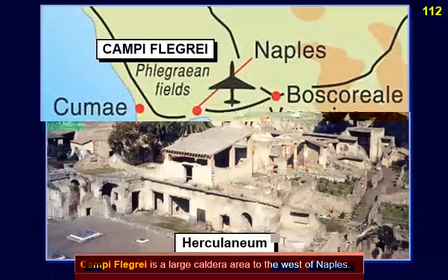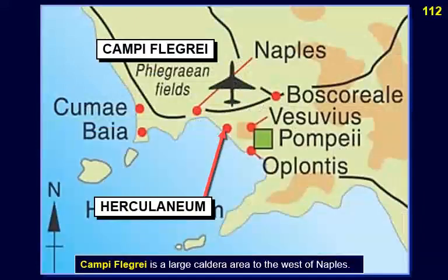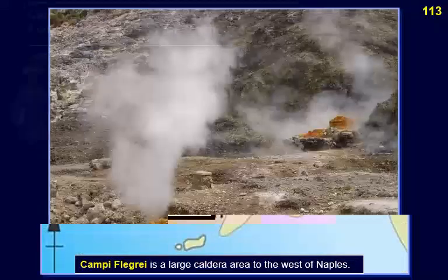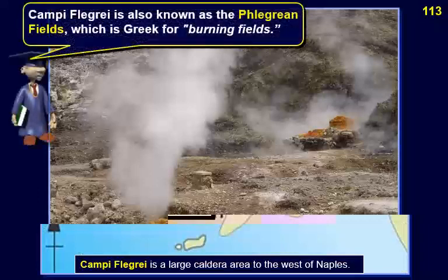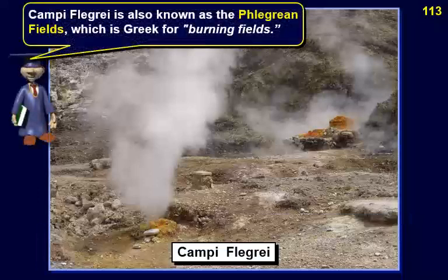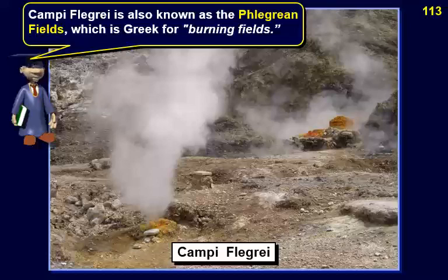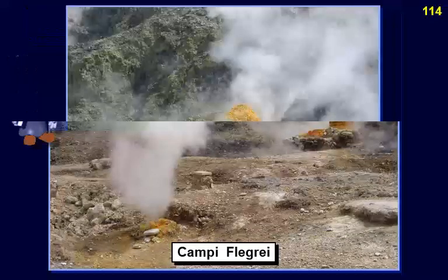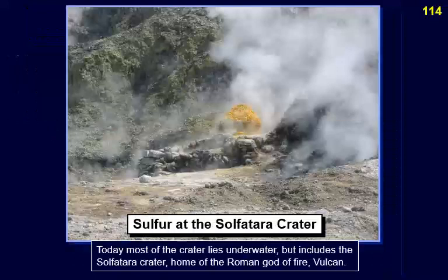Campi Flegrei is a large caldera area to the west of Naples, also known as the Phlegraean Fields, which is Greek for 'burning fields.' Today most of the crater lies underwater but includes the Solfatara crater, home of the Roman god of fire, Vulcan.